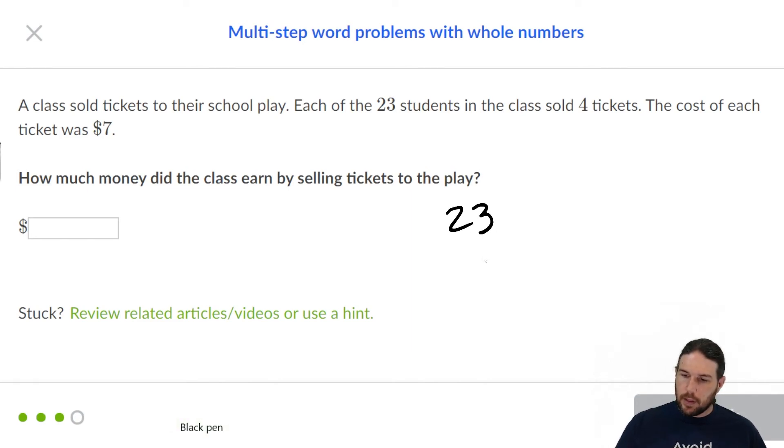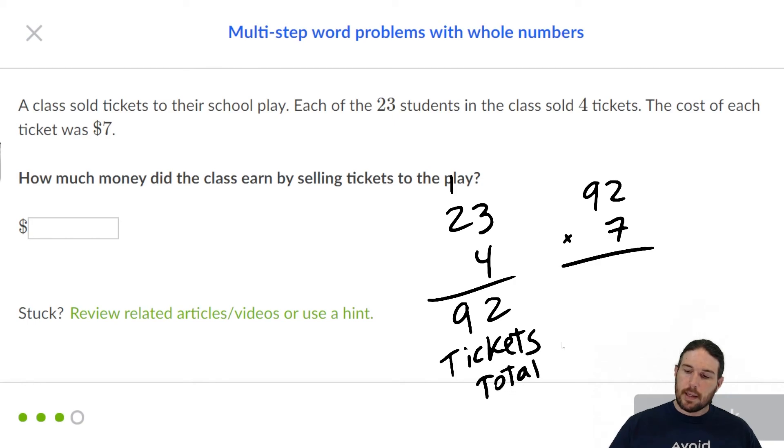So I'm going to say 23 times 4. Well, 3 times 4 is 12, or 4 times 20 is 80 and 10 is 90. So they sold 92 tickets total and then we're going to take that 92 and we're going to multiply it by 7 to get the total amount of money.